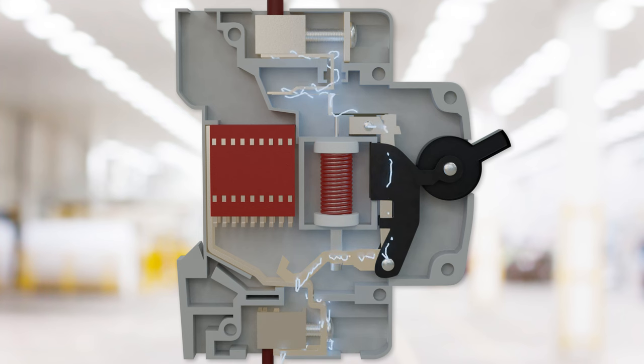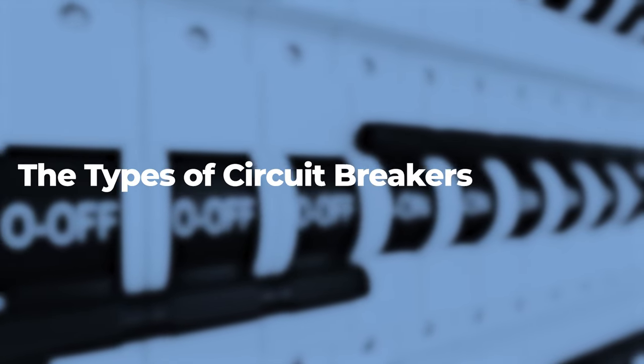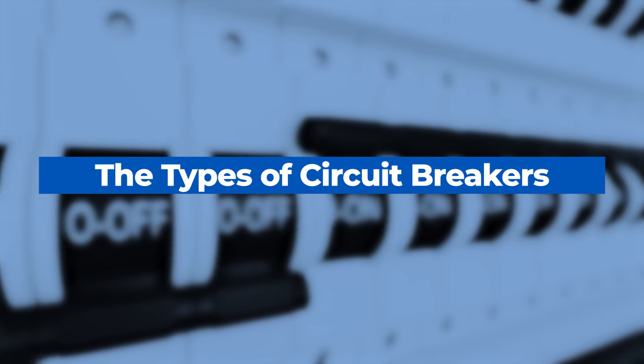When a problem occurs, the actuator forces the contactors apart, stopping the flow of electricity. Let's review the types of circuit breakers.